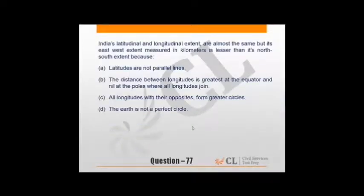India's latitudinal and longitudinal extent are almost the same, but its east-west extent measured in kilometers is lesser than its north-south extent. What's the reason? When we say about equator and latitudes, distance is around 111 kilometers between latitudes. But on other hand, when we talk about longitudes, distance increases towards equator, but distance at higher latitudes is less. So generally, even if extent is almost same, distance of latitude is larger than longitudes. So option B stands correct.